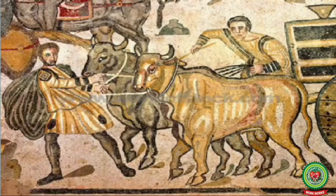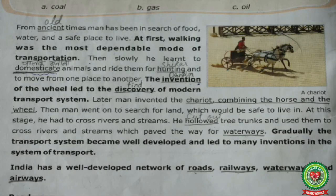Animals like horses, goats and oxen were domesticated in the early stage, and they were used for hunting and for moving from one place to another. Just like today we keep dogs at our homes, in the early stages of human development, men used to keep horses, oxen and goats for hunting and for moving from one place to another.